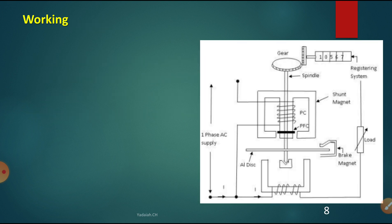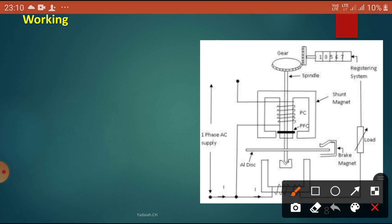Here you can see: this is the M2 pressure coil, and this is the M1 current coil. The pressure coil is connected to the voltage — it measures the voltage. The current coil measures the current.